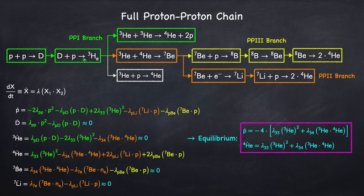The green is the first branch, the orange is the second branch, and the yellow is the third branch. There's also a fourth branch in white, but its rate is significantly less than the other three branches, so it's generally ignored.